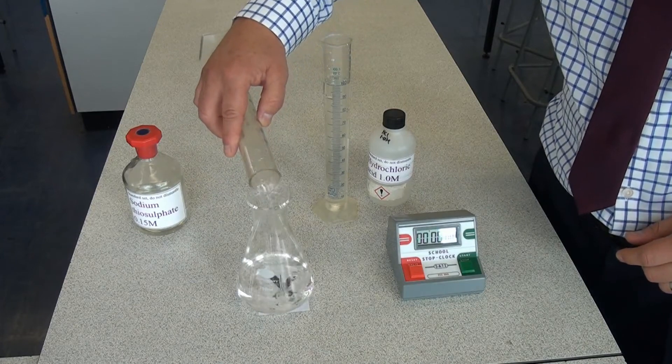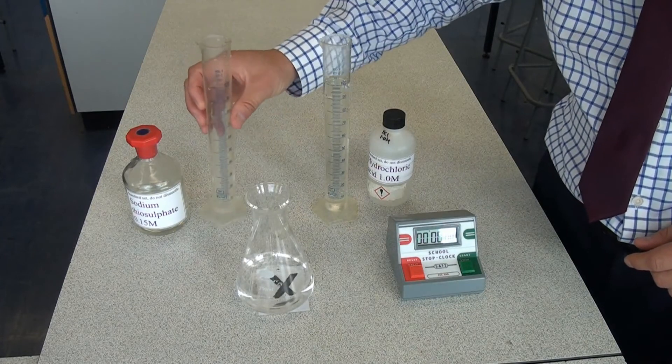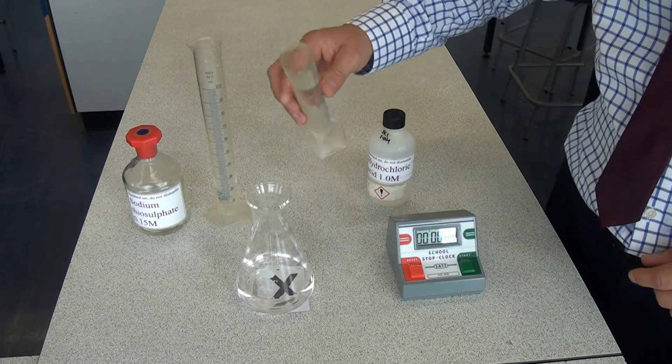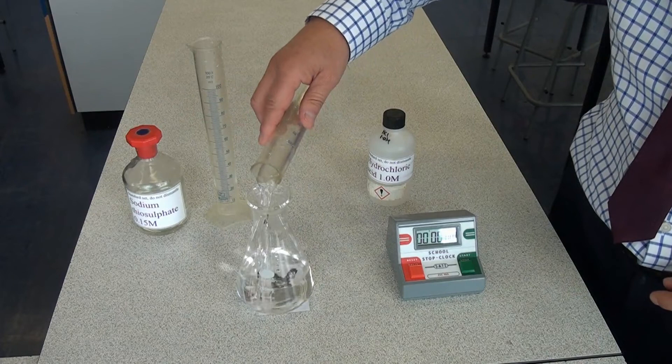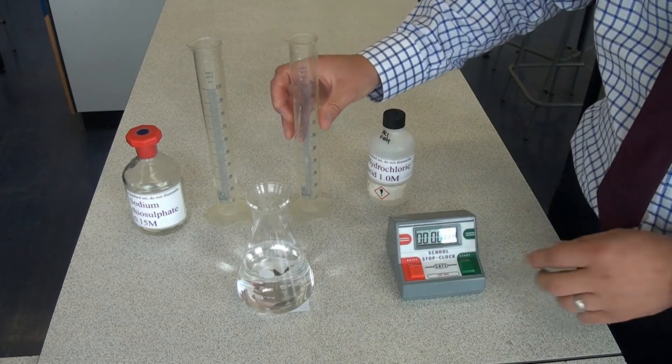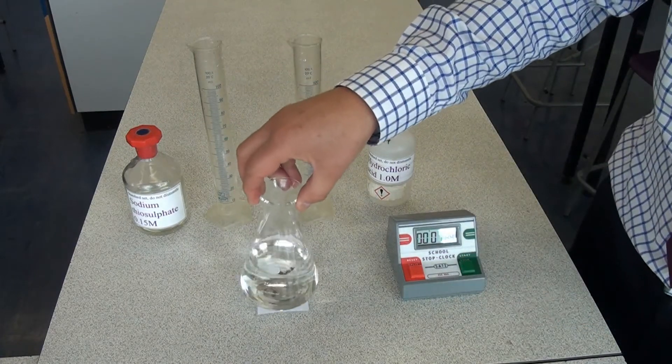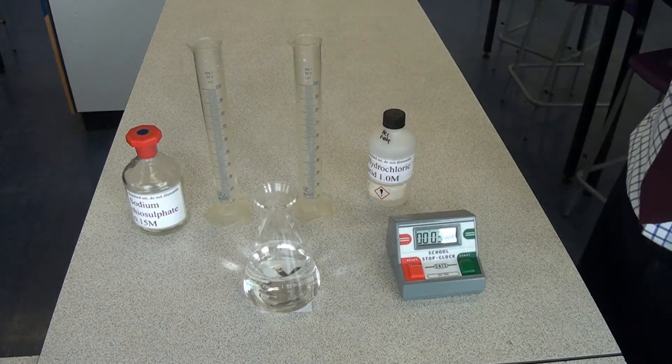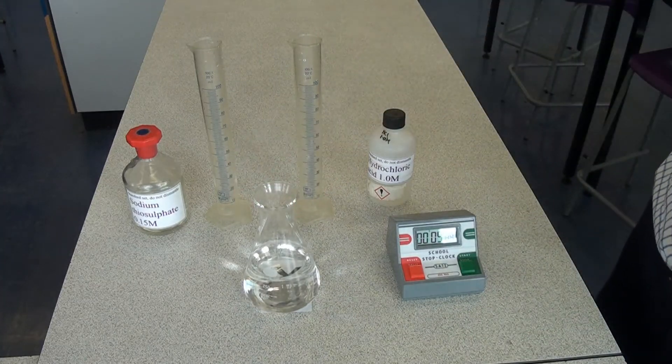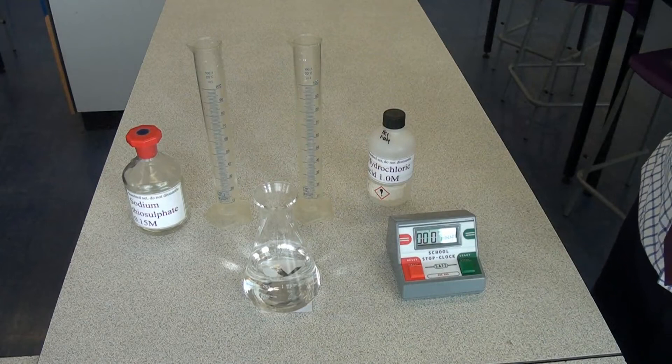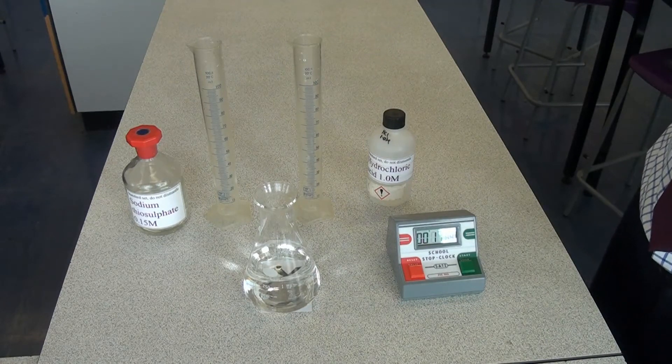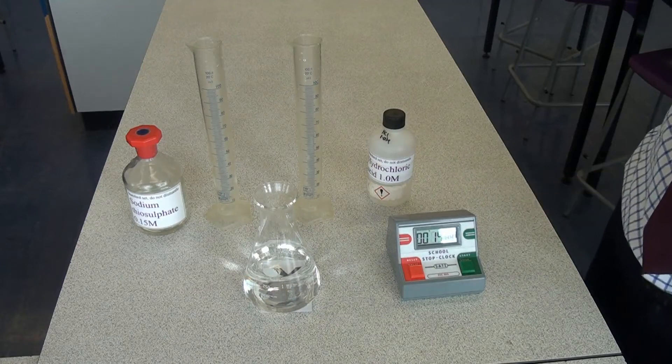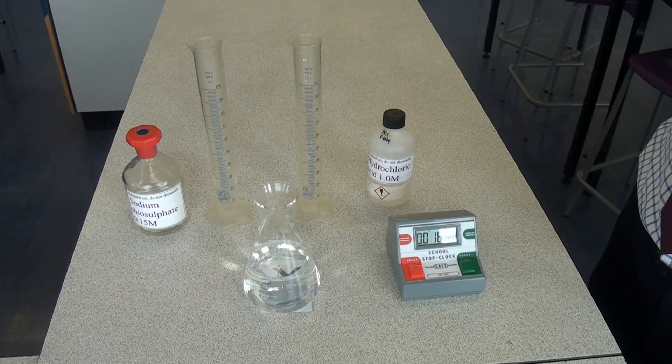And then as I pour the second reactant in, I'm going to start the stopwatch. Now, as the solid is produced, those tiny particles of solid will make the solution go cloudy. And so what we're going to do is time it until we can no longer see the cross through the reactants. Now, where we've got two liquids like this producing a solid, we call that solid a precipitate.